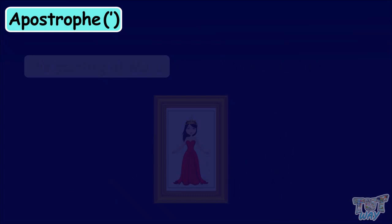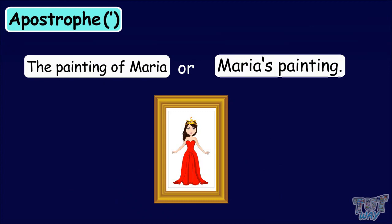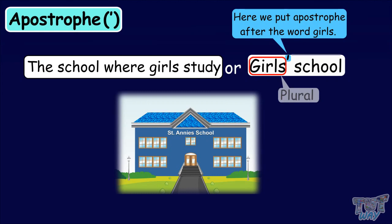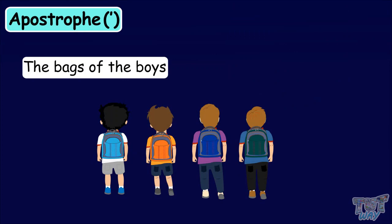The school where girls study can be written as girls' school. Kids, can you see the difference here? Here we have put an apostrophe after the word 'girls' as it is a plural noun. In plurals, we put the apostrophe after the letter 's' of the plural word. The bags of the boys can be written as the boys' bags. The classes of girls: the girls' classes.